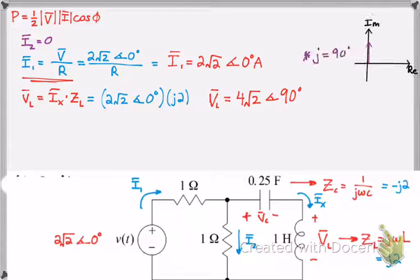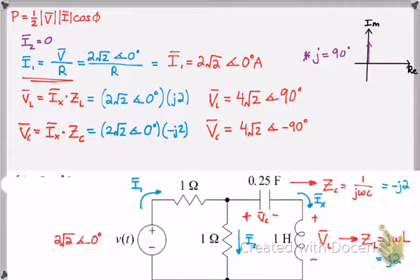How do I get that angle 90 degrees? If you look at the imaginary component and make an imaginary and real axis, notice that j has a value of 1, pointing all the way up the imaginary axis, which forms an angle of 90 degrees with the coordinate system. V of C is the voltage across the capacitor. We get 4 radical 2 angle negative 90 degrees. Same concept, except the value is negative because we have negative j, so it's pointing downward.